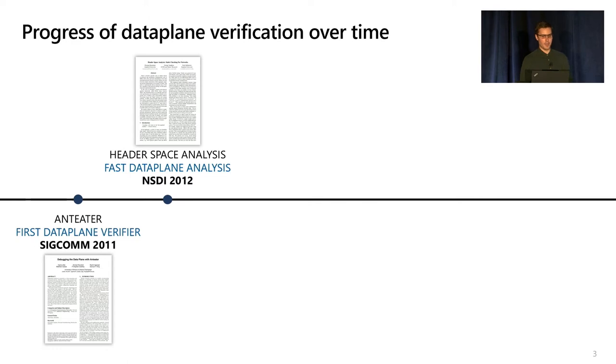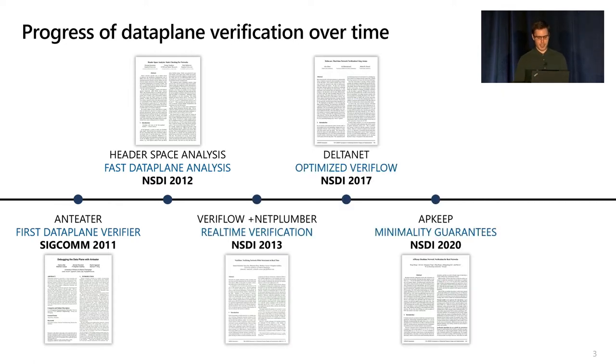Some of the early work in network verification demonstrated that we could do verification of network data planes at scale efficiently, and later work built on these foundations to show how verification could be performed incrementally. The idea is that if there's a small change to the network state, you can recheck this in real time, like on the order of microseconds or milliseconds, which lets you use these in a context where changes are constantly happening.